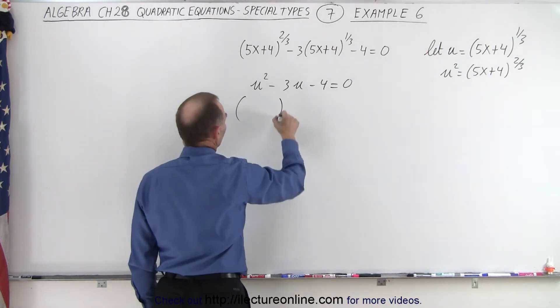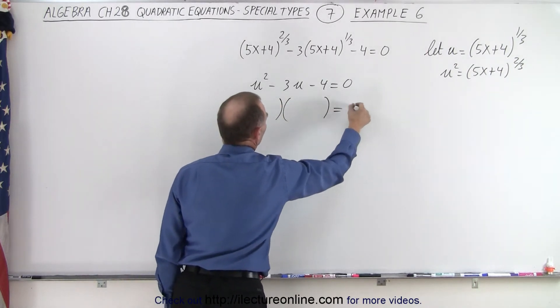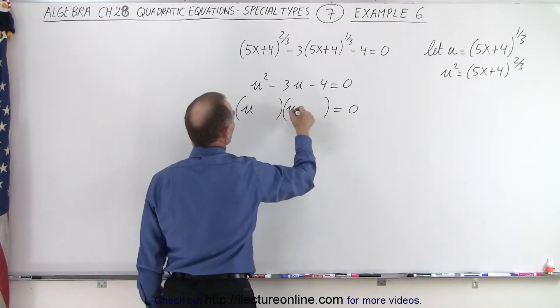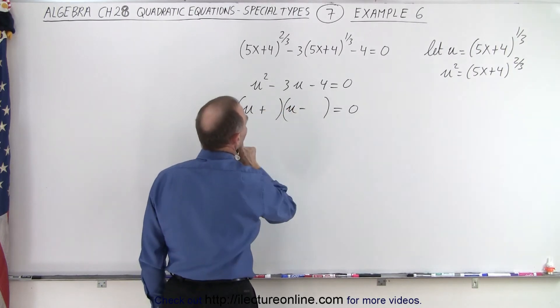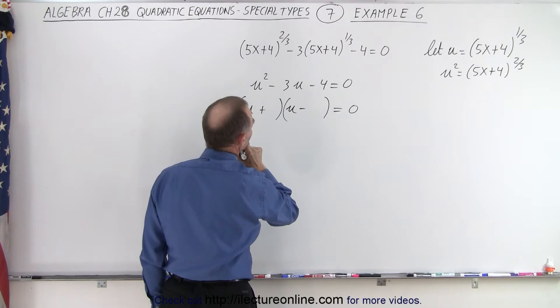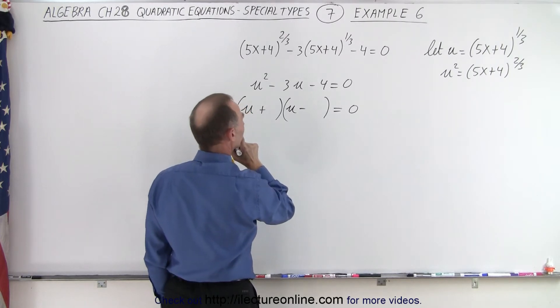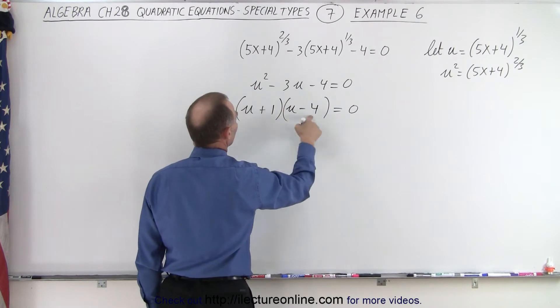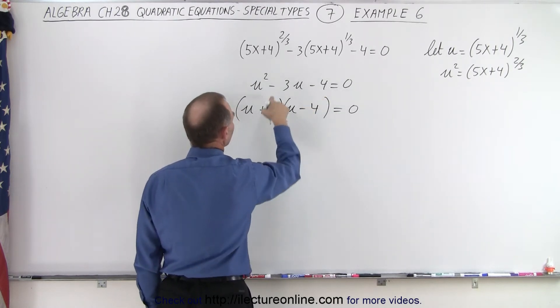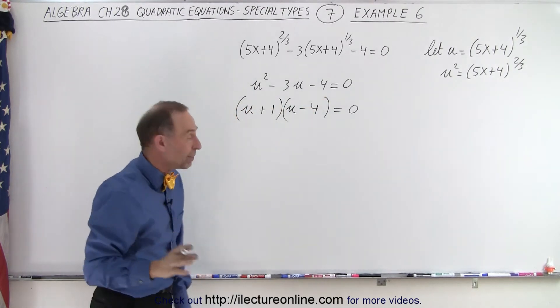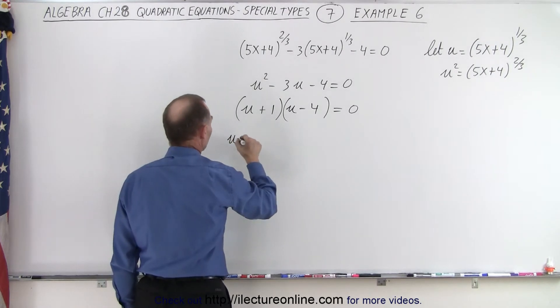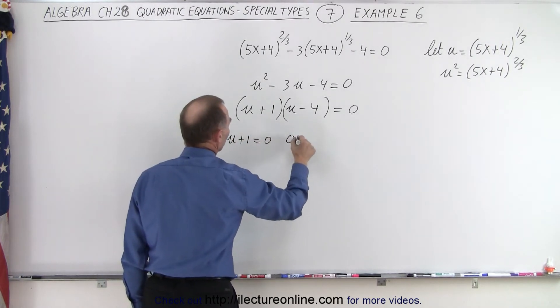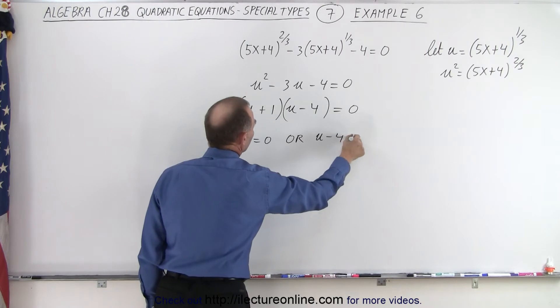Again, we can factor this. We need a u and a u, a positive and a negative. And how about 3 and 1? Nope, 4 and 1. 4 and 1 will work. Negative 4 plus 1. When you multiply, you get negative 4. When you add, you get negative 3. And so that means that u plus 1 equals 0 or u minus 4 equals 0.